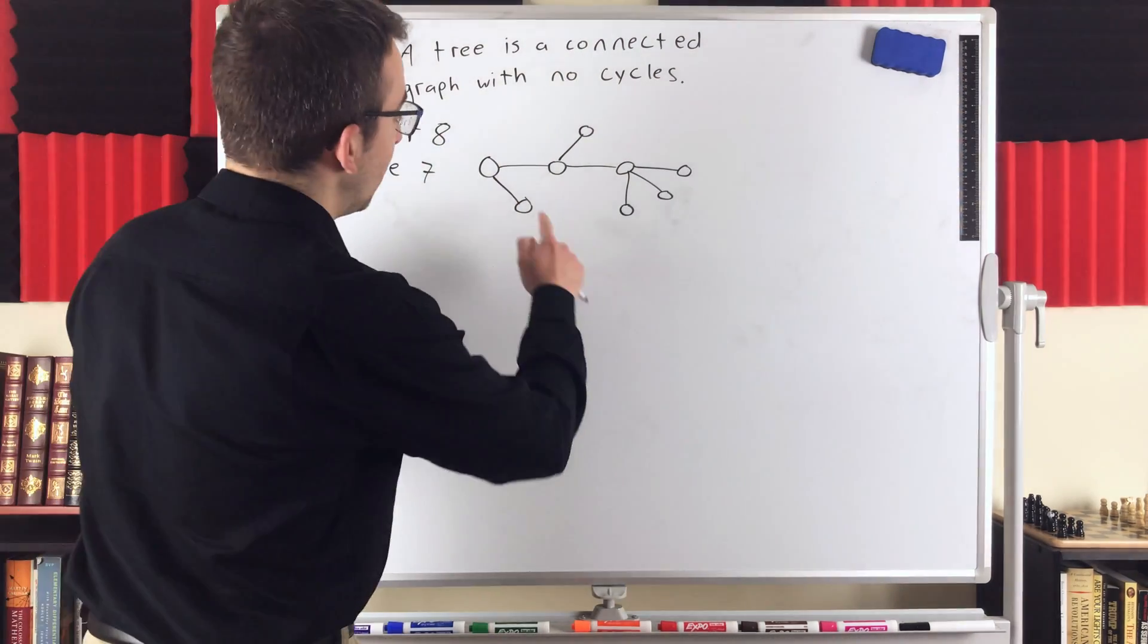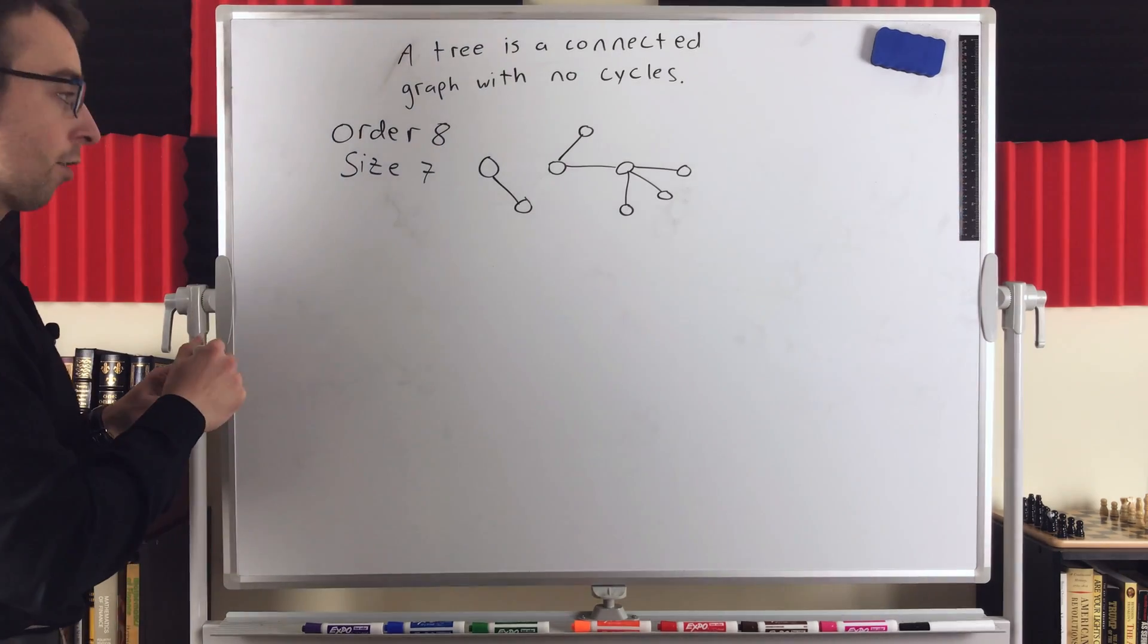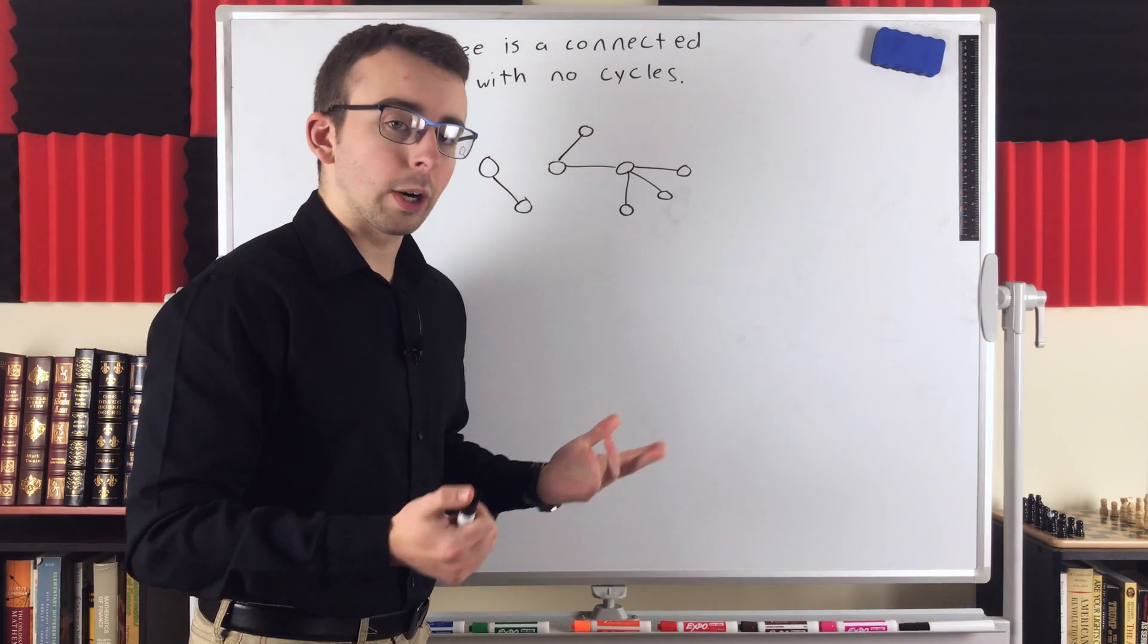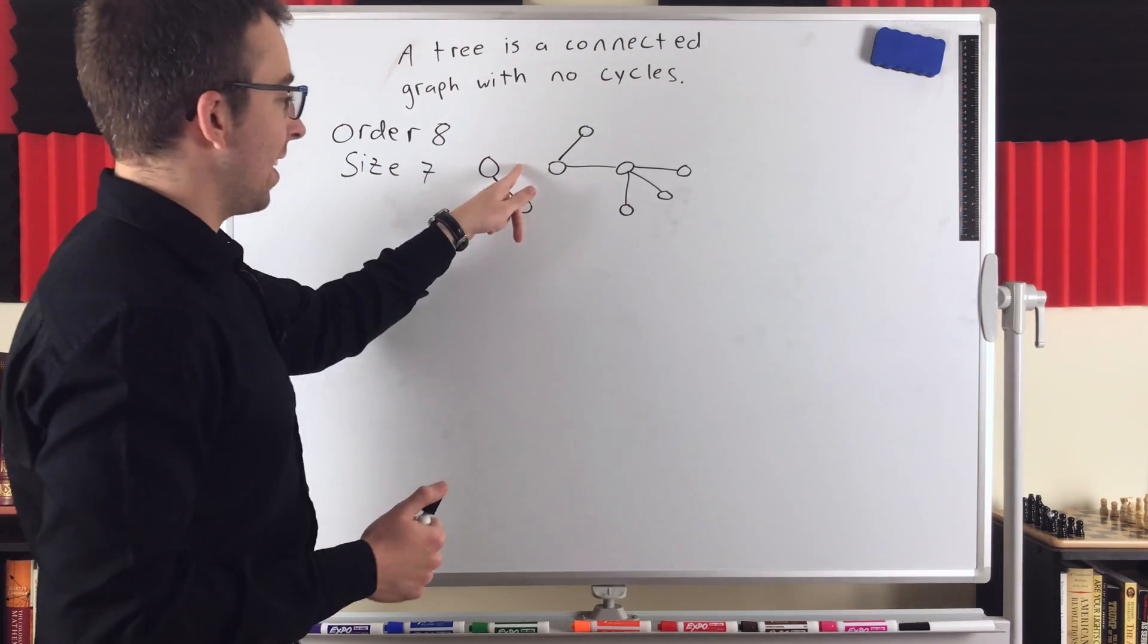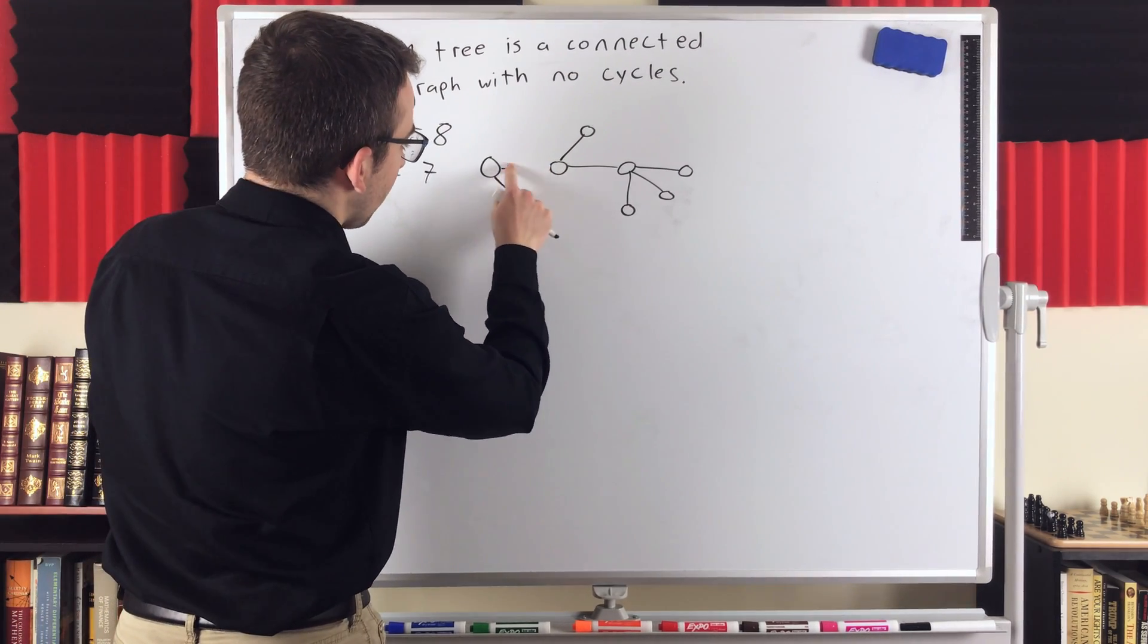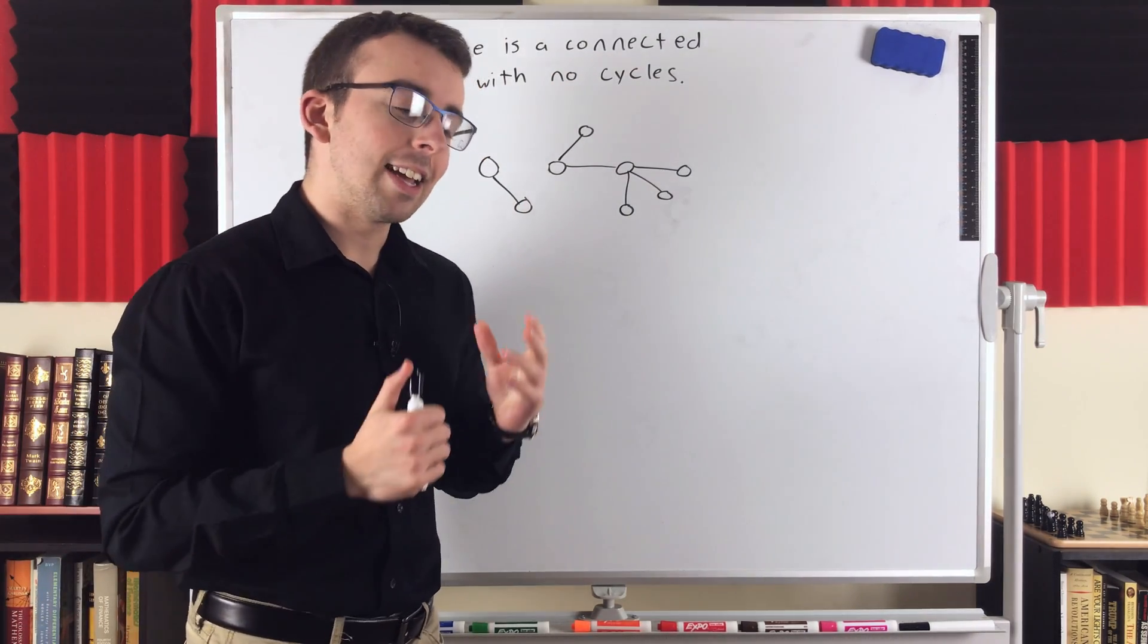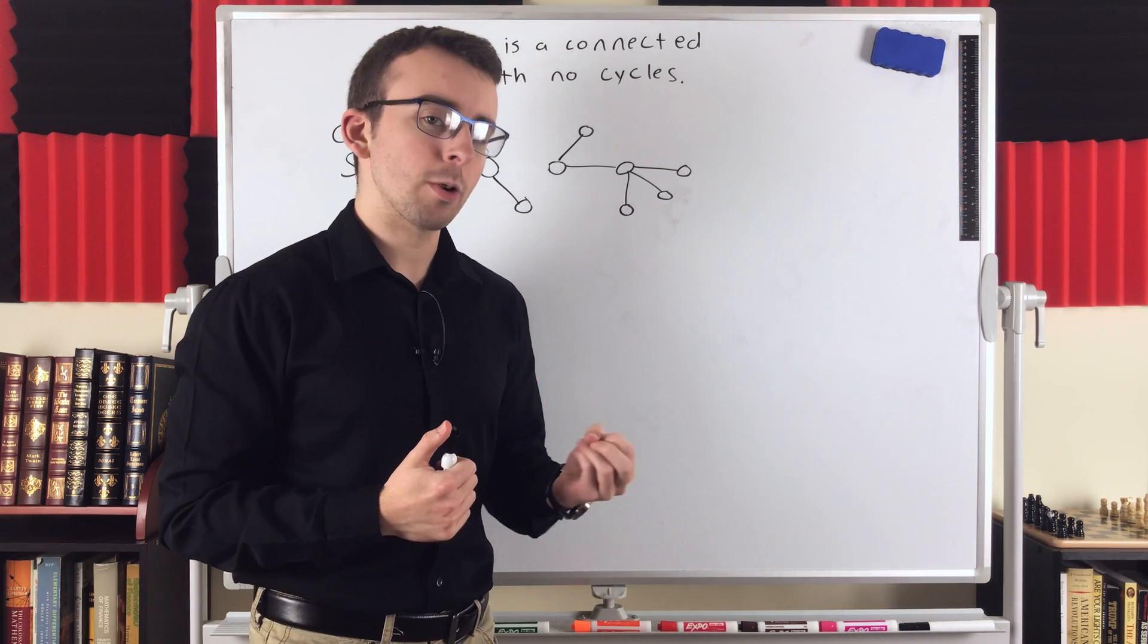Now, suppose we delete an edge from this graph. Let's say we delete this edge here. Notice that we have disconnected the graph. So that edge is what we would call a bridge. If when you delete an edge from a graph, you get one more component than you started with. So here we've got two components, whereas we started with one. Then that edge is called a bridge, right? Because it's a bridge between these two different pieces of the graph. So you delete the edge, and you're left with two components. Another equivalent definition of a tree is that it's a graph where deleting any edge disconnects the graph. So every edge in a tree is a bridge.